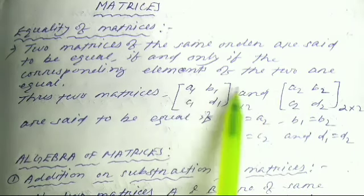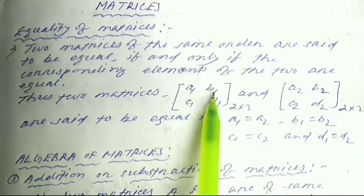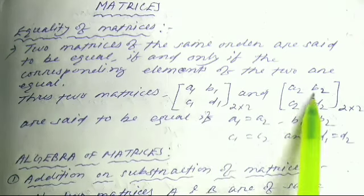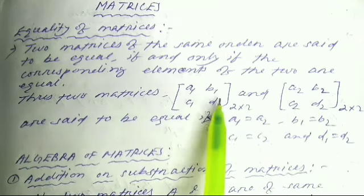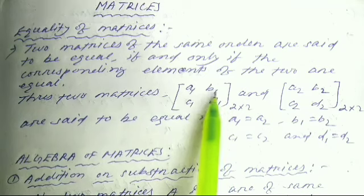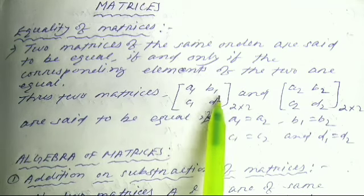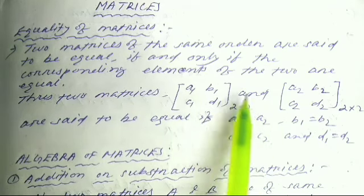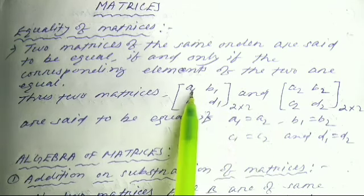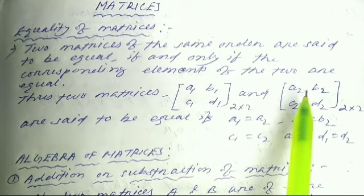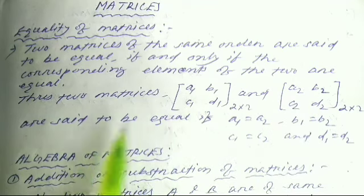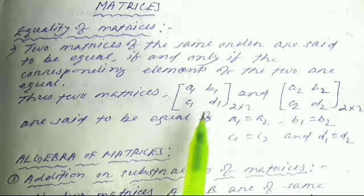So then a1 equals a2, b1 equals b2, c1 equals c2, and d1 equals d2. It is simple: if the matrices are equal, then the corresponding elements are equal — the elements at the same position are equal.